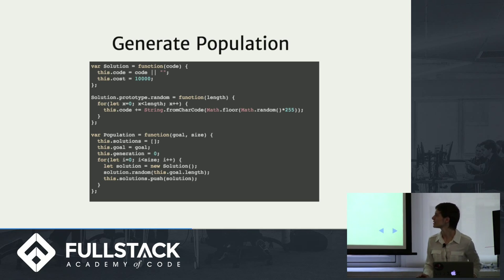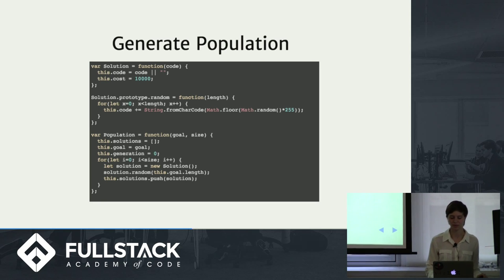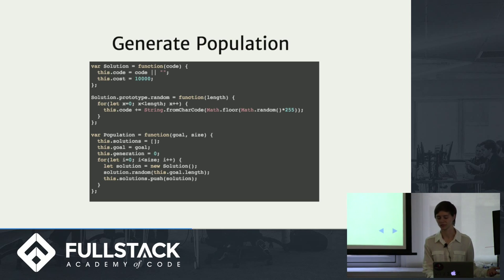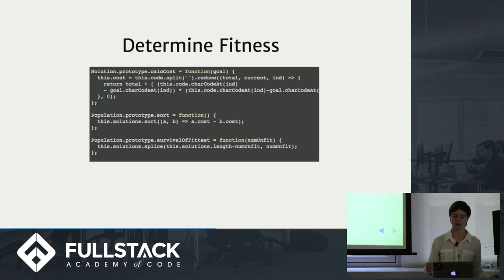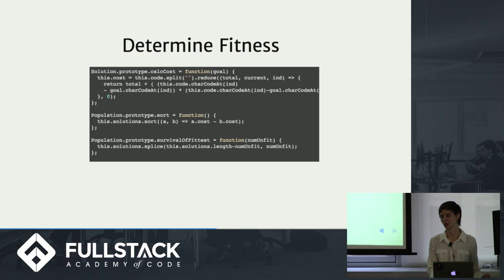Here is some code I wrote to show you how this would work. I have a Solution class, which represents one individual. It has a code — its string of whatever it happens to be — and a cost, which is how far away it is from hello world. Then you have a population, which is an array of all your possible solutions, a goal you're trying to reach (hello world in our case), and a generation number. We randomly generate a population of a certain size, then calculate the cost for each solution based on how far it is from hello world, sort those solutions to get the best ones at the top based on character codes, and then we have the survival of fittest function which kills off an arbitrary number of the worst solutions.